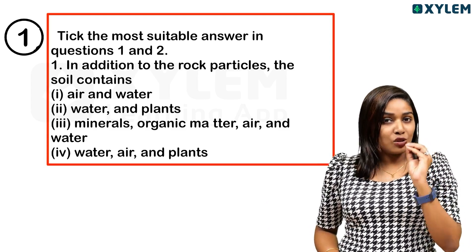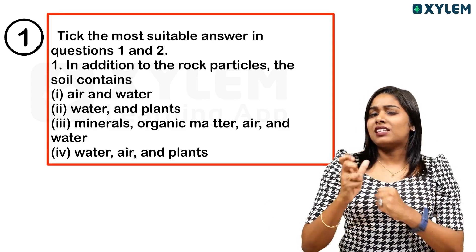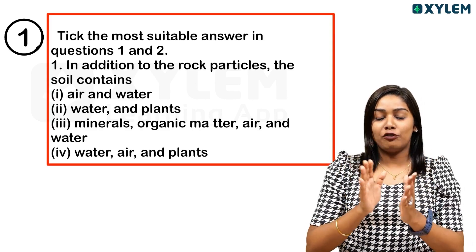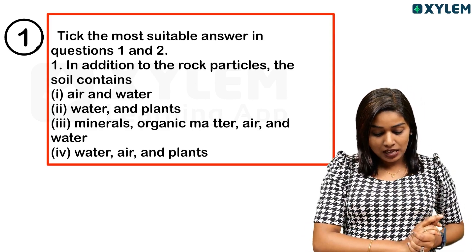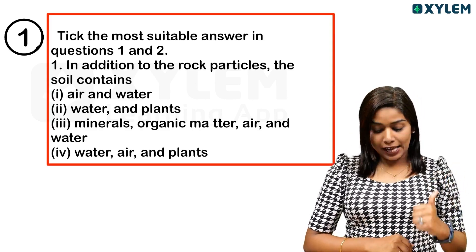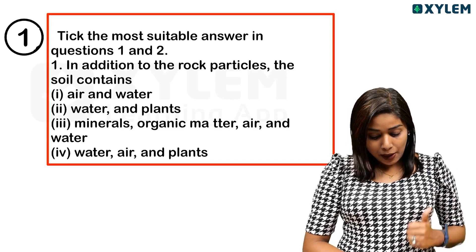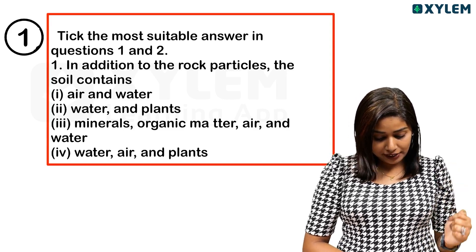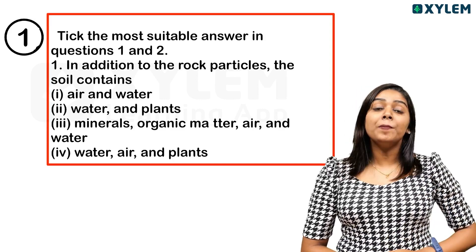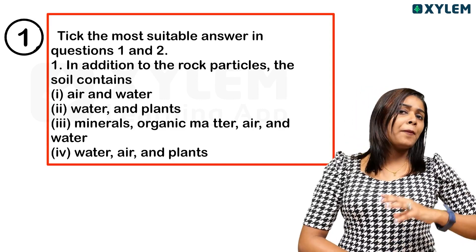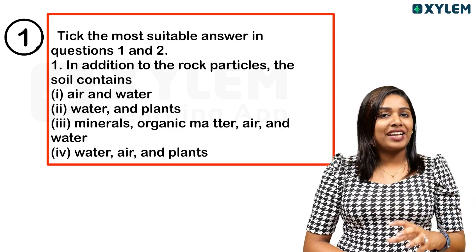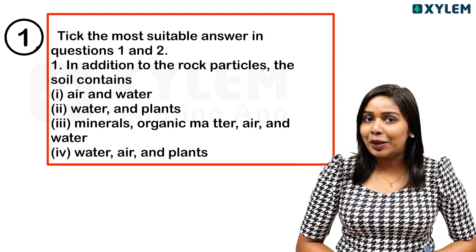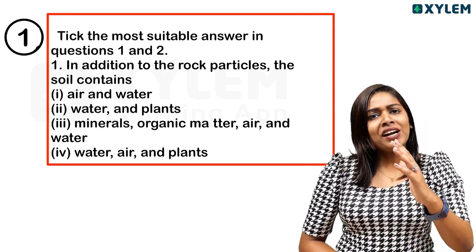So, what is soil? There will be some other components. These other components — you will find out at the end. Here are the options: Air and Water, Water and Plants, Minerals, Organic Matter, Air and Water, Water and Plants. So, what is soil called? What composition is it called? Very simple.